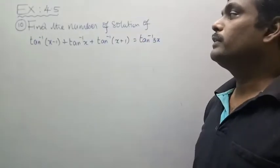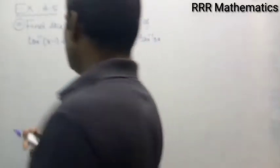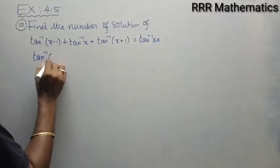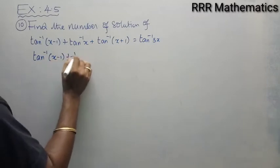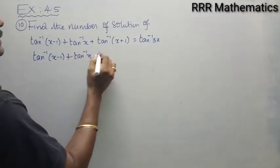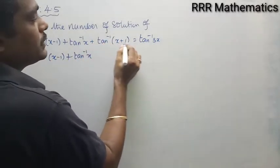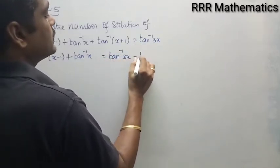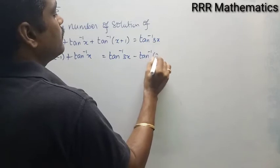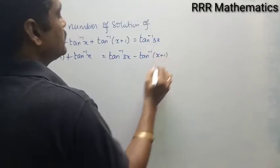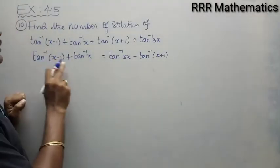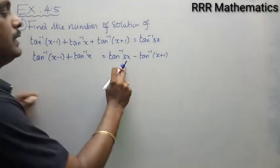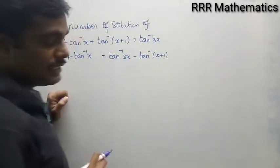We want to find out the number of solutions. Here is what is given. I will write tan inverse of (x minus 1) plus tan inverse x, and I will take tan inverse of (x plus 1) to the right hand side: tan inverse 3x minus tan inverse of (x plus 1). So on the left side we have the form tan inverse x plus tan inverse y, and on the right side tan inverse x minus tan inverse y.